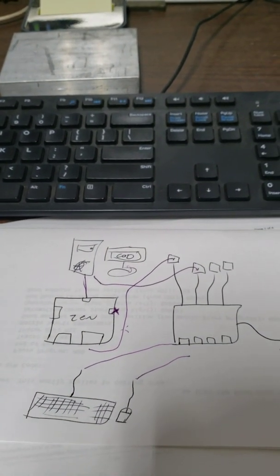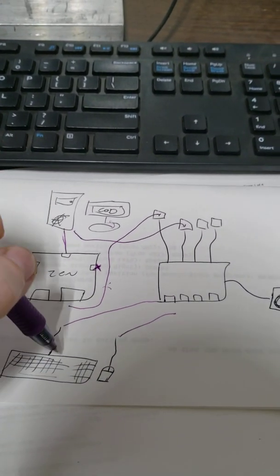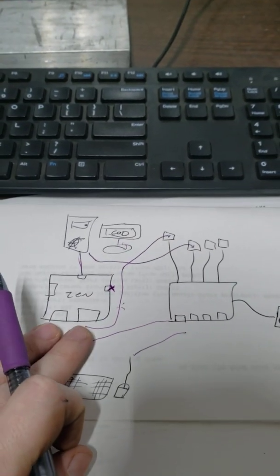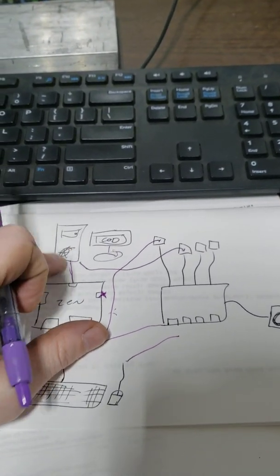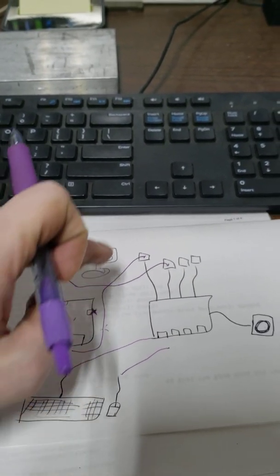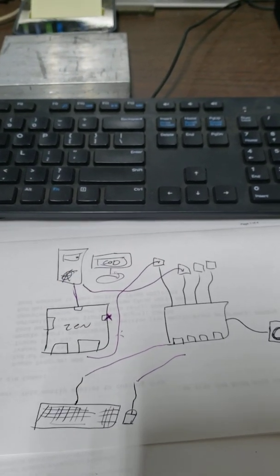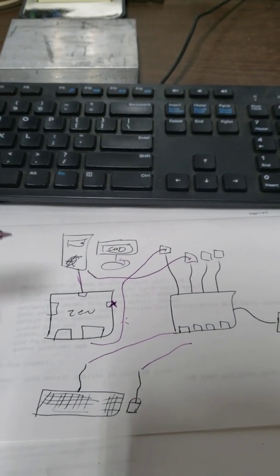So again, mouse and keyboard with no switch just go straight into the Zen and will only be seen as a controller. So if you need to control your PC, you'll have to unplug them, plug them straight to the PC, and then you can control your PC like normal. Unplug again, plug back into the Zen, and then they'll be seen as a controller.